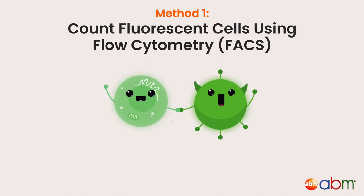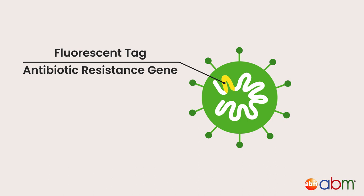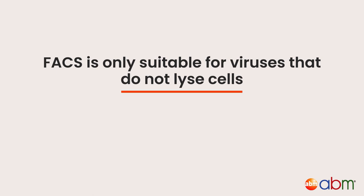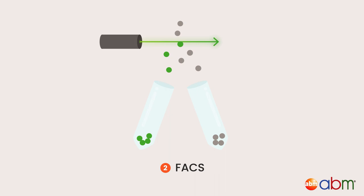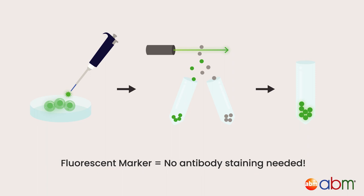Method one: count fluorescent cells using flow cytometry or FACs. If your viral construct carries a fluorescent tag or contains an antibiotic resistance gene, you can use the FACs method to determine functional titer. Note that the FACs method is only suitable for viruses that do not lyse cells, such as lentiviruses. Start by transducing your target cells with serial dilutions of your lentiviral prep, then use FACs to count how many target cells are positive for fluorescence. This method is especially efficient if your vector carries a fluorescent marker, as you won't need to do any antibody staining.